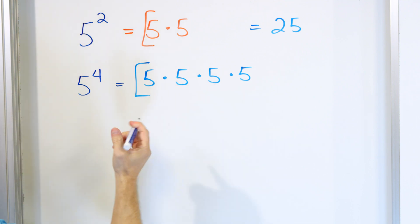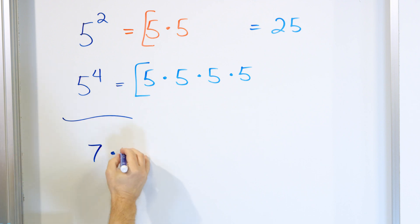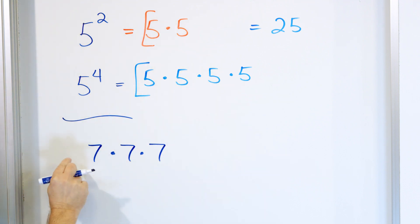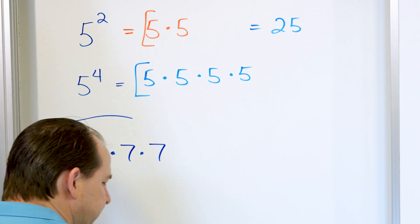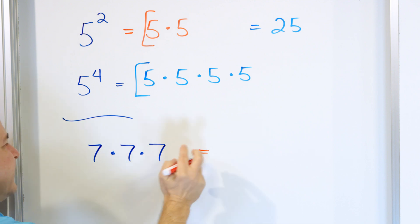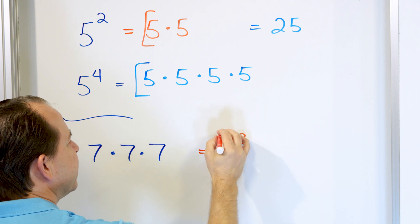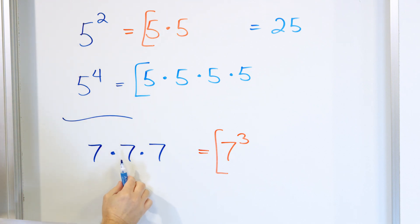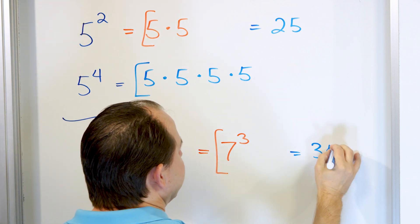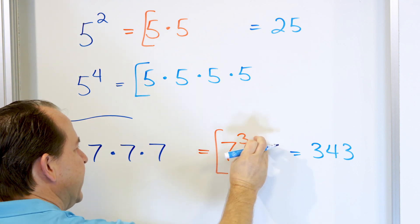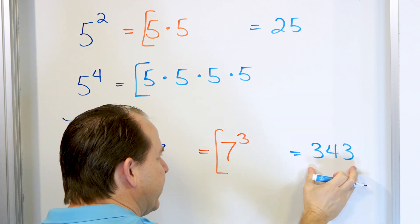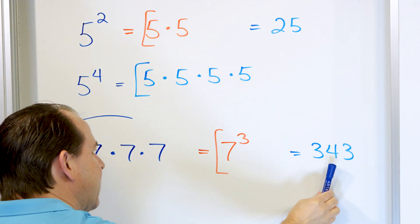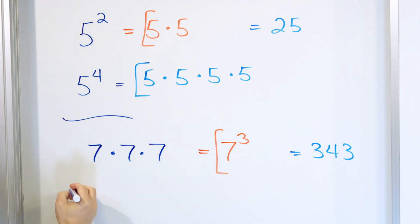Now let's switch gears. What about seven multiplied by seven multiplied by seven? Instead of taking an exponent and writing it as a product of factors, this is a product of factors and I want you to write it as an exponent — as something raised to the power of something. Well, the base is what we're multiplying together, so it's seven, and there are one, two, three of them. So this is seven to the power of three. We know seven times seven is 49, and 49 times seven is 343. So seven to the power of three equals seven times seven times seven, which equals 343.